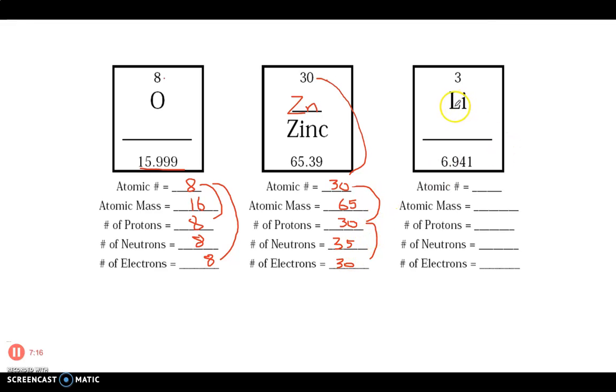Let's do one more together. This one is lithium on the periodic table. Its atomic number is 3. Atomic mass, we round up to 7. Number of protons is the same as the atomic number, which is 3. Number of neutrons is 7 atomic mass minus 3 the atomic number, which gives me 4. Four neutrons plus 3 protons gives me a mass of 7. And the number of electrons is the same as the number of protons, which is 3.